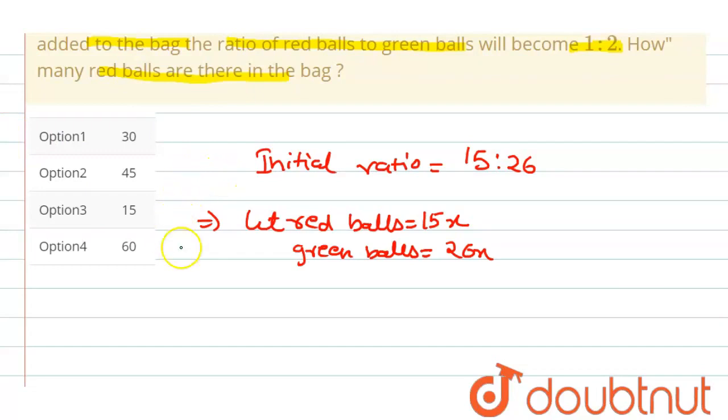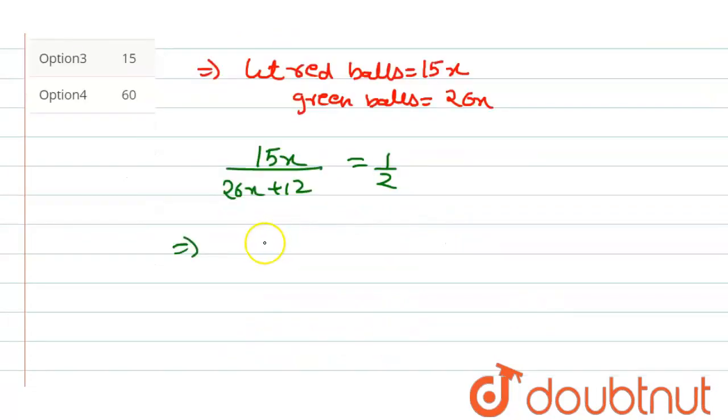What is the ratio of 1 to 2? The ratio of 1 to 2 is the same. Red balls are the same, 15x. Green balls are the same with 12 added. Now we have to simplify this.